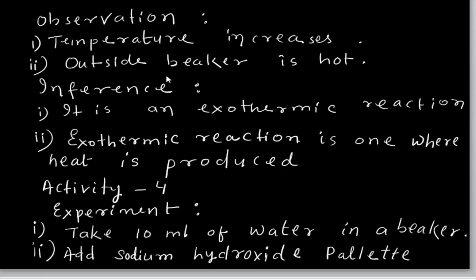Observation: temperature increases because it is an exothermic reaction. An exothermic reaction is one where heat is produced. The temperature increases and the outside of the beaker becomes hot. You are adding concentrated sulphuric acid drop by drop to water and stirring slowly, so the reaction produces a dilute aqueous solution of sulphuric acid, but heat is released throughout.